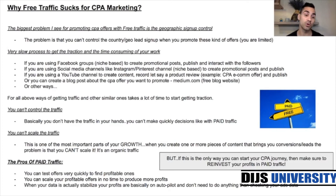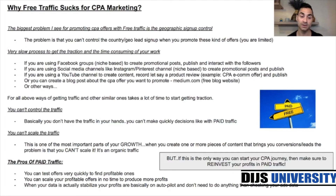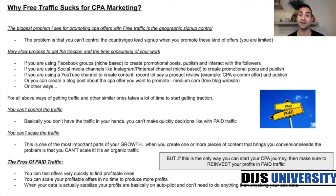Now let's look at the pros of paid traffic — just the three biggest points so you can see the difference. First, you can test offers very quickly to find profitable ones. Second, you can scale your profitable offers in no time to produce more profits. Third, once your data is stabilized, your profits are basically on autopilot and you just need to check your ads. The process is: test, find profitable campaigns, scale them, optimize the data, and then it runs on autopilot.